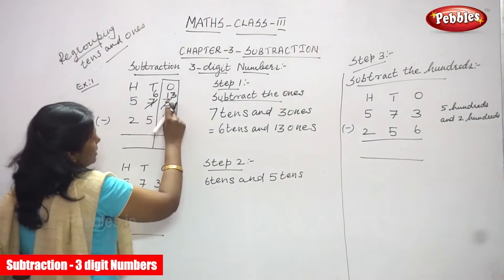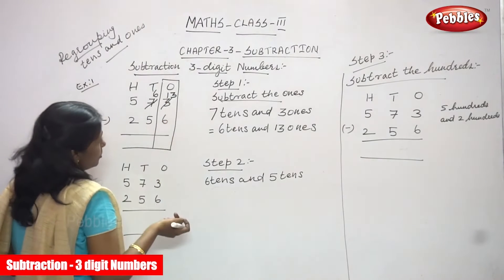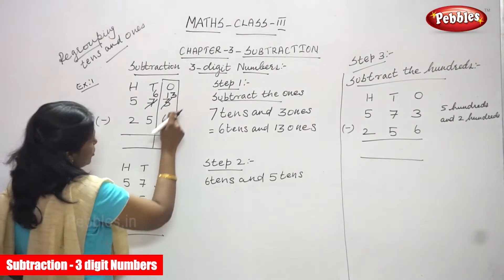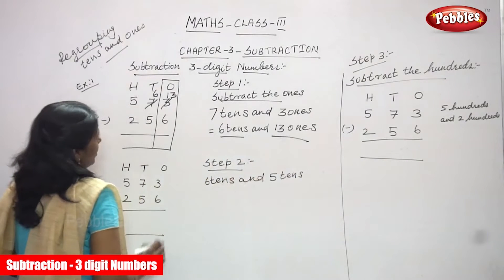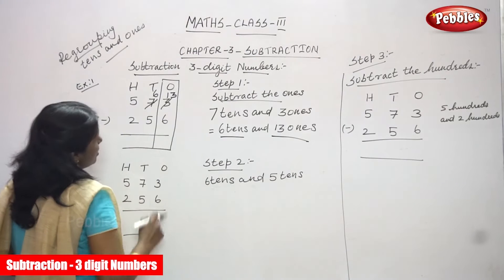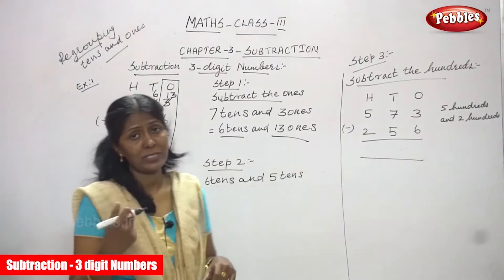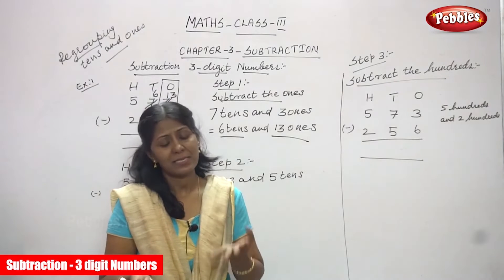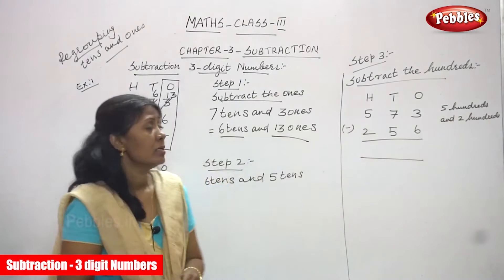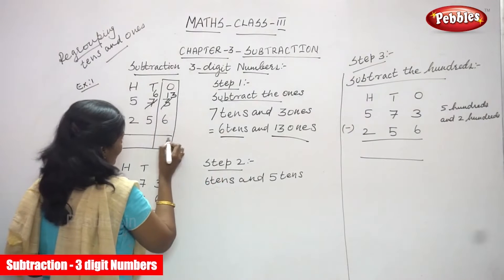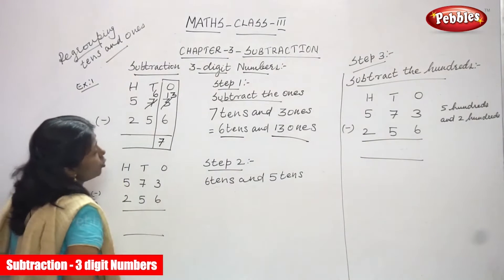13 — now it is a greater number. 13 minus 6. You have to subtract from 13 to 6. That is what I have written: 6 tens and 13 ones. You know that is backward counting. After 6, start counting: 7, 8, 9, 10, 11, 12, 13 — the answer is 7. That is 7 ones. Now step 1 is over.